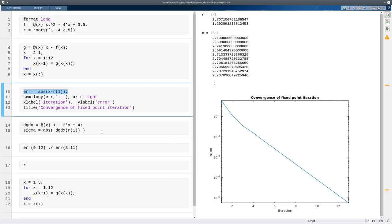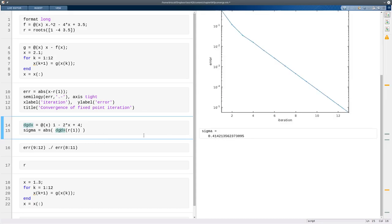So that is linear convergence. Once the error goes down by a constant factor at each step. That factor comes from the derivative of g, so based on f and g above, I can define gdx and evaluate that at the fixed point. And when we take the absolute value, we call that sigma. So this is the amount by which errors should be reduced at each step.